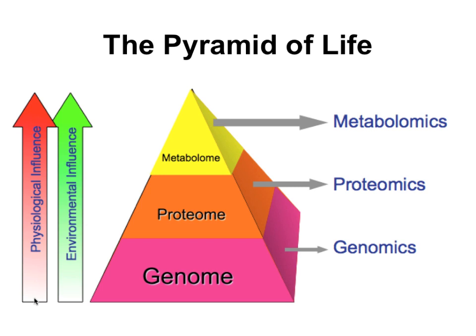People who do proteomics will argue the proteome is not 22,000 proteins — in humans it's 200,000, which is correct. But what we're particularly interested in are enzymes or isozymes, which are the workhorses in the cell. There are about 5,000 or 6,000 of those in human or mammalian cells. Those enzymes manipulate the metabolome.